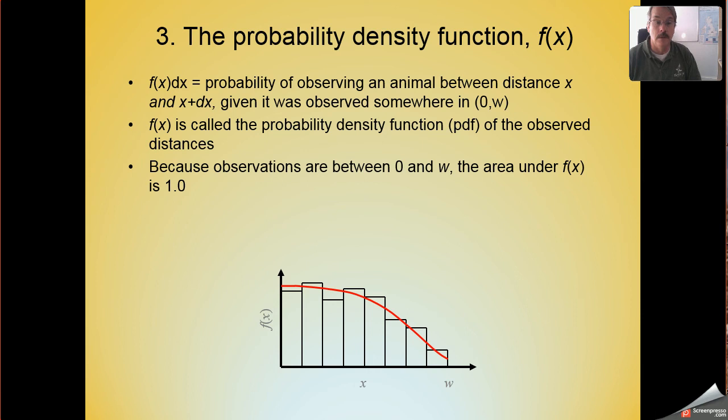Previously we wanted to calculate the area under the detection function curve. Well, we're still interested in that area under the curve, but now we're interested in the area under the probability density function f(x). It turns out that the area under the probability density function f(x) is defined to be 1. So we know by assumption that the area under this red curve, when the red curve represents a probability density function, must be equal to 1. Because we already know that we've seen animals somewhere between 0 and w. So we now have a new integral. The integral between 0 and w of f(x) is defined to be 1.